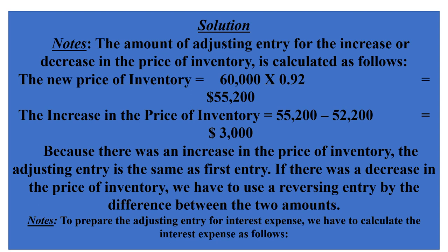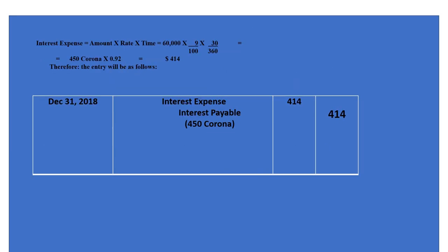The increase in the price of inventory is the difference between the two purchase amounts: 55,200 minus 52,200, because there was an increase in the price of inventory. The adjusting entry is the same as the first entry.